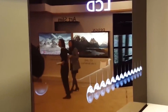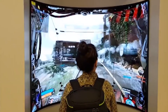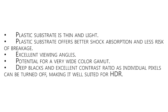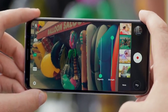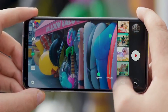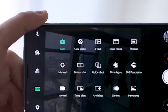Here are a few key things to keep in mind about P-OLED before we move on. Plastic substrate is thin and light. Plastic substrate offers better shock absorption and less risk of breakage. Excellent viewing angles, the potential for a very wide color gamut, deep blacks and excellent contrast ratio, as individual pixels can be turned off — making it well suited for HDR. While P-OLED displays may not necessarily be the brightest, they still have the potential to become the commonly used displays in smartphones.